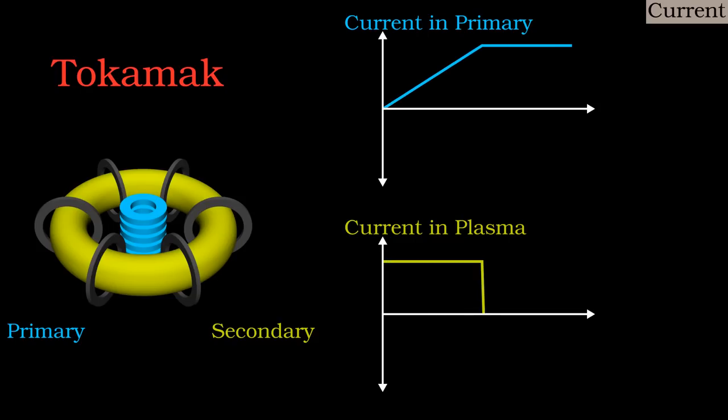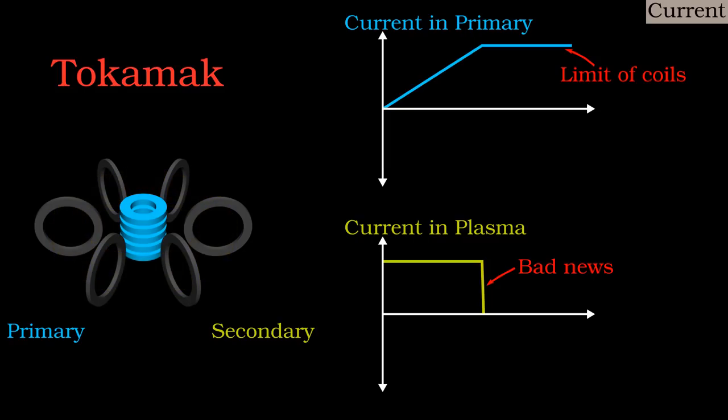But inside the tokamak the current must be constant, and therefore in the primary coil it must rise constantly. If it is rising steadily amp by amp, eventually it will reach a thousand, a million, or whatever the engineering limit is on the coil. The current in the primary will then plateau or fall, and the tokamak plasma will fail one way or another.